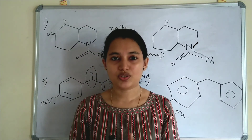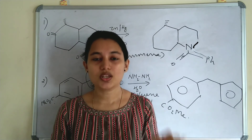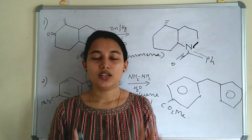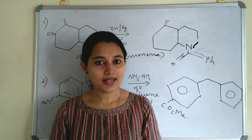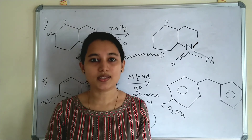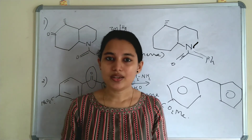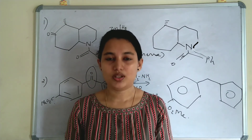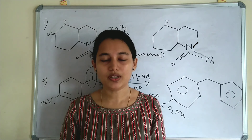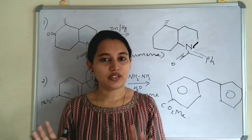Let me summarize. Clemmensen Reduction is the reduction of carbonyl compounds like aldehydes and ketones to CH₂ in acidic medium, in the presence of zinc amalgam and HCl. Wolff-Kishner Reduction is the reduction of carbonyl compounds like aldehydes and ketones to CH₂ in the presence of a base and hydrazine. That is the main difference. When other carbonyl compounds like acids or esters are given, they are not reduced — only aldehydes and ketones are reduced in both reactions.